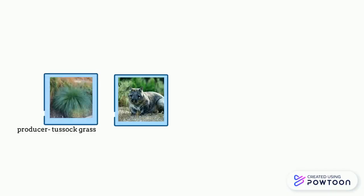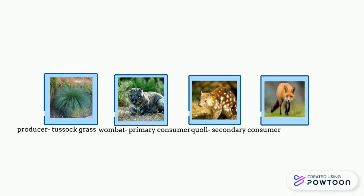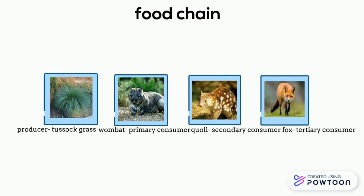My food chain. The producer is the tussock grass which the Wombat eats. My primary consumer is the Wombat. My secondary consumer is the Quoll which eats the Wombat. And my tertiary consumer is the fox which eats the Quoll.